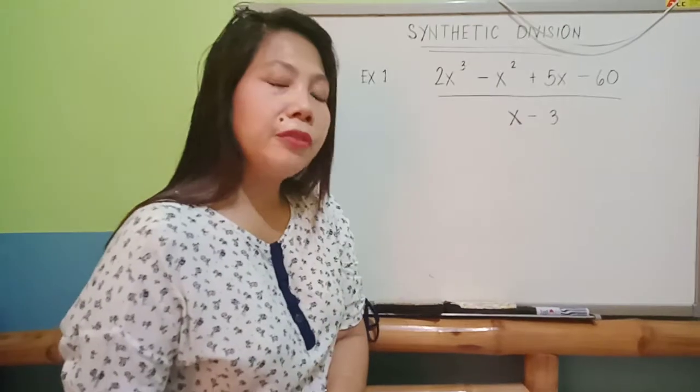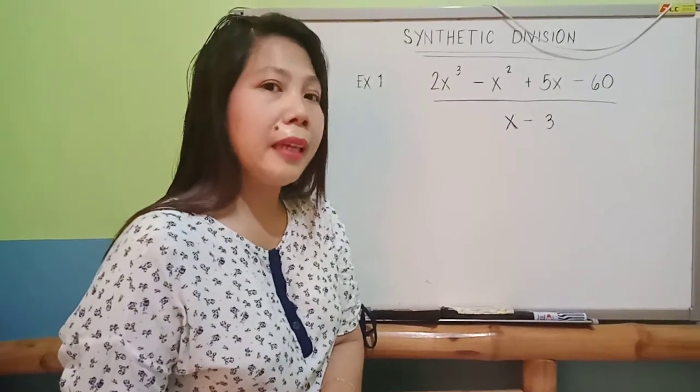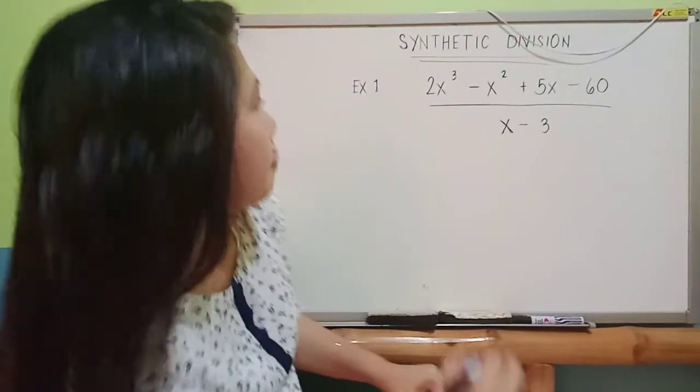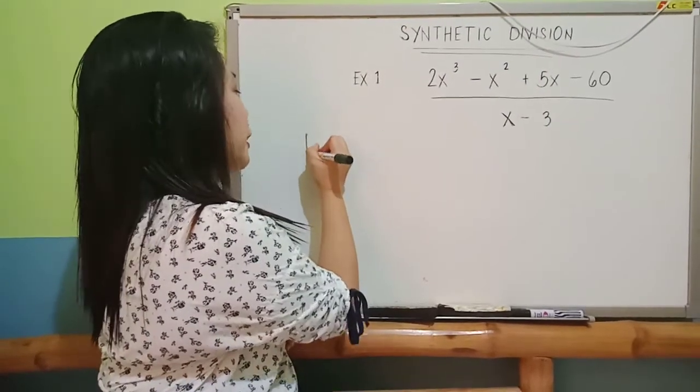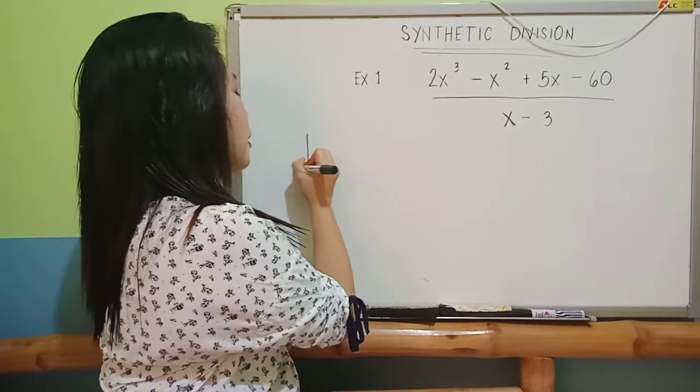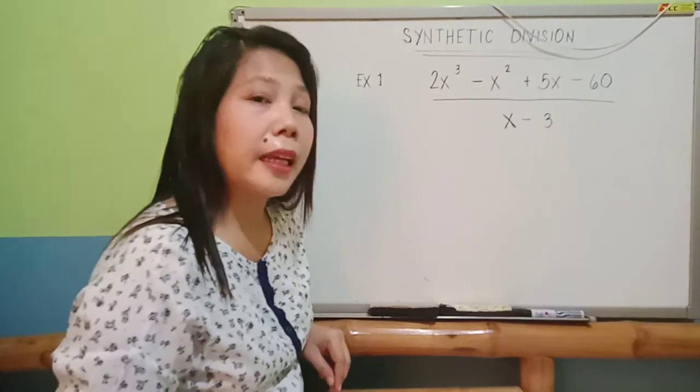With this example, the first thing that we have to do is to make a symbol. The symbol is a vertical line adjacent with a horizontal line.